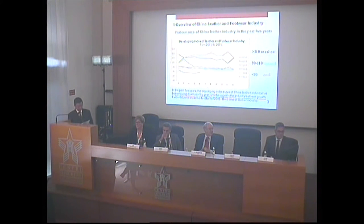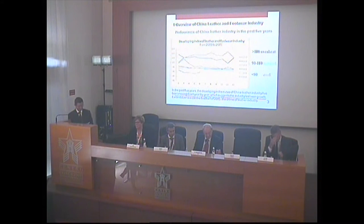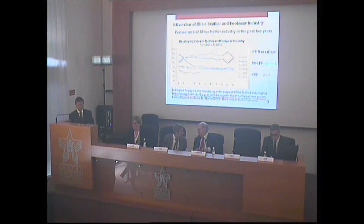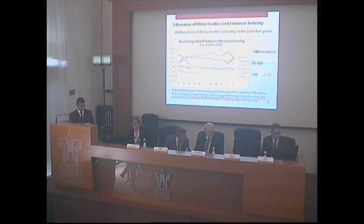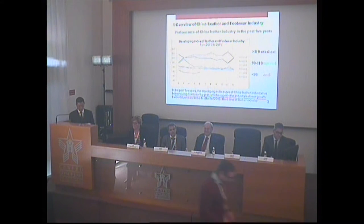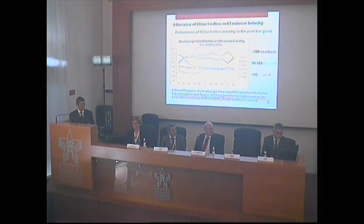The chart in this slide is the developing index of the leather and footwear industry, showing performance over the past five years. The y-axis developing index ranges from 90 to 111 as normal, over 111 as overheated, and below 90 as cooling. The index curve moved down year by year, with a notable decline in the first half of 2015, indicating the industry is in a hard time.